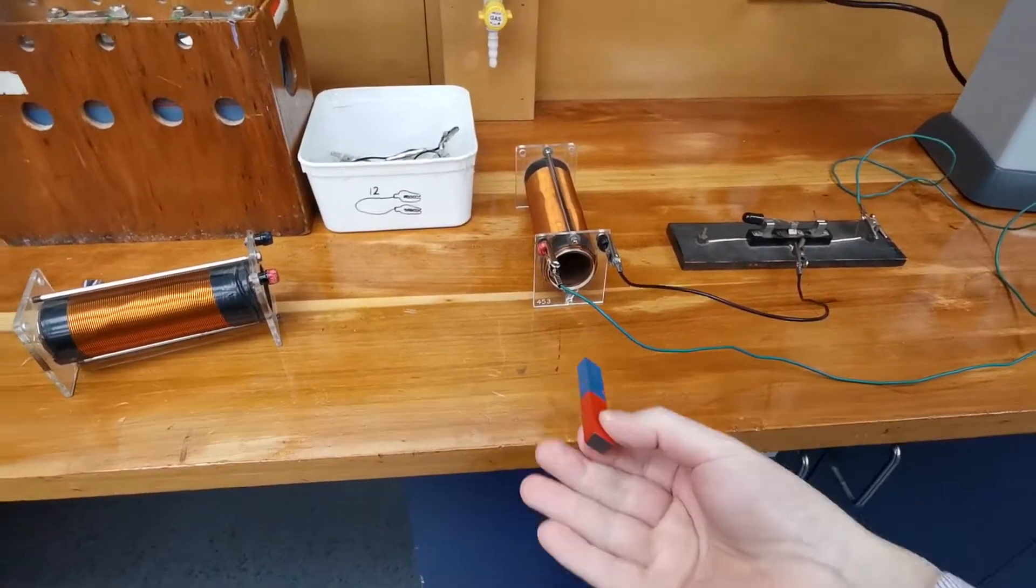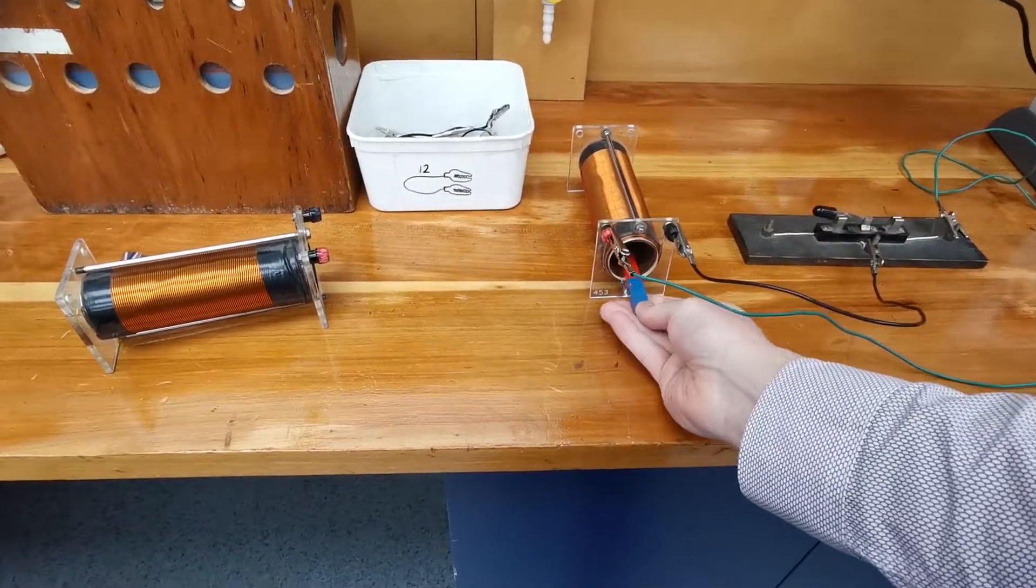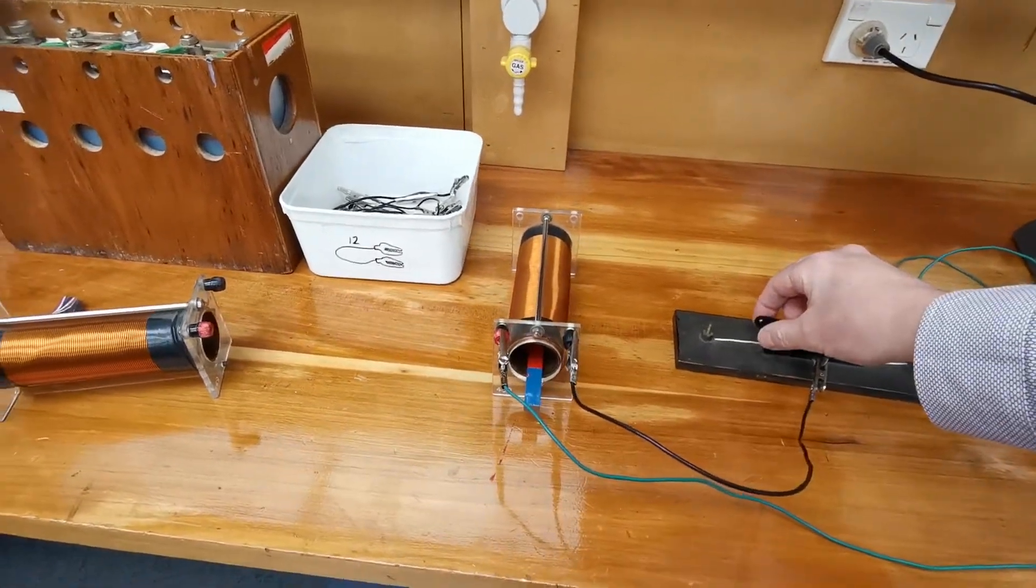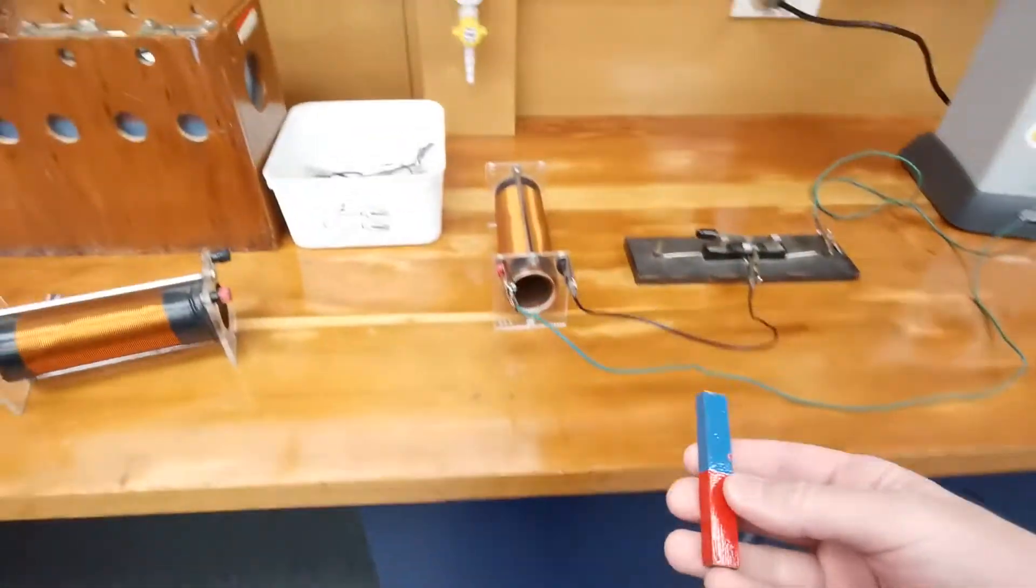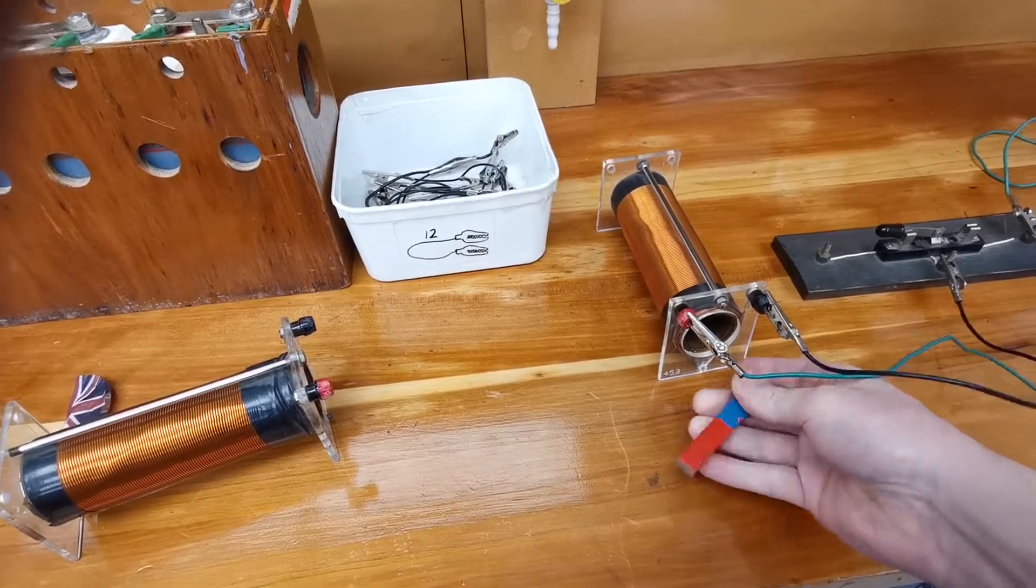If I put a north pole in, then the north pole should repel, and that's what we see as the magnet hits the floor. Then if we put the opposite direction, a south pole...